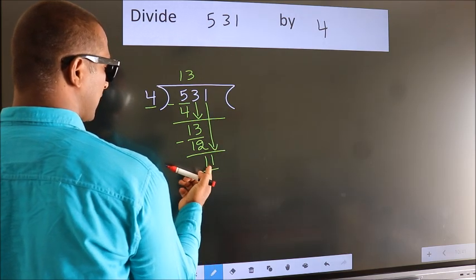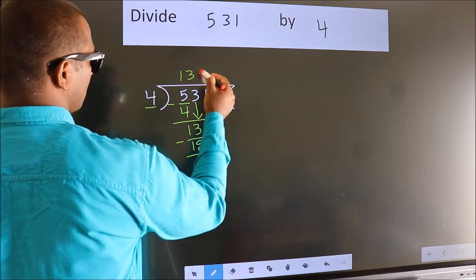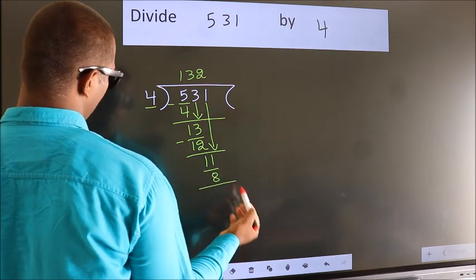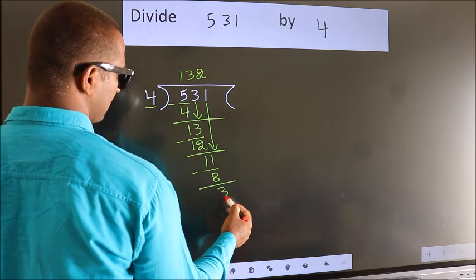A number close to 11 in 4 table is 4 twos, 8. Now, we subtract. We get 3.